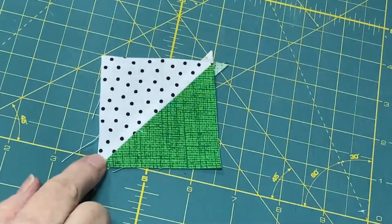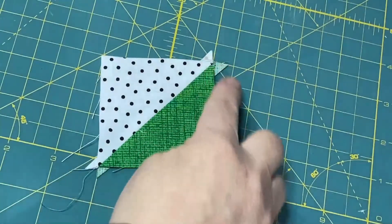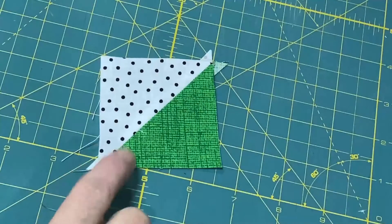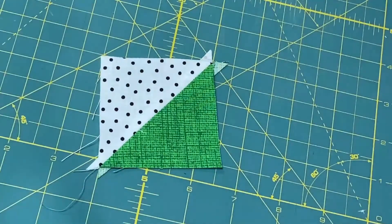Now, with many methods, when you make a half-square triangle, it's going to come out a little oversized, and you can see I've got these little dog ears, so I want to trim it up so that it's the perfect size to use in my block.